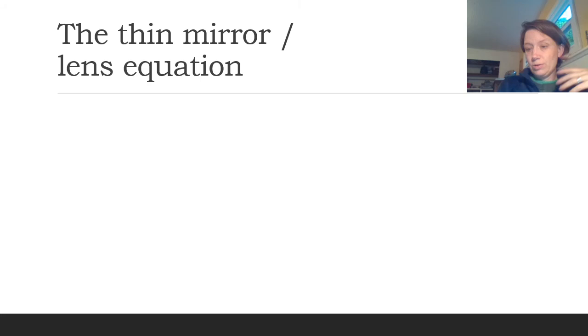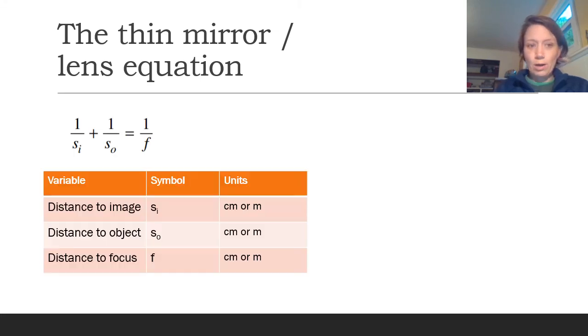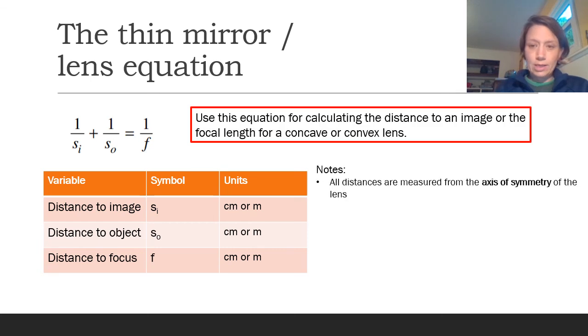It's super cool. You can actually use exactly the same equation. This thin mirror slash lens equation works for lenses as well. All the variables are exactly the same. The only thing to note about lenses specifically is that we're measuring the distances from the axis of symmetry, not from the surface of the mirrors. We're measuring from the center of the lenses.